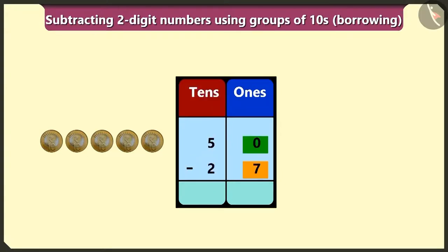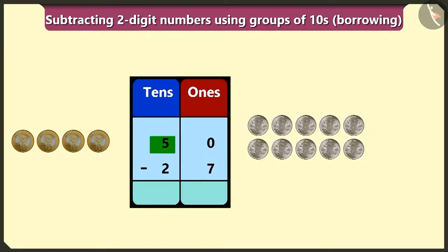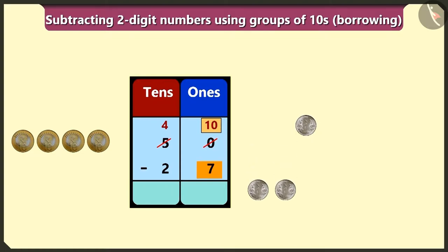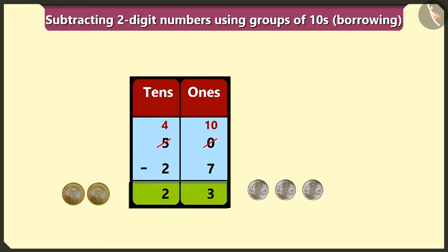First of all, we will do subtraction of numbers in the box of ones. Here we cannot subtract seven from zero in the box of ones. So we will borrow one ten from its neighbor number five in the place of tens. Now we will write ten ones in the place of zero in the box of ones, and we will write four tens instead of five tens in the box of tens. If we subtract seven ones from ten ones, we will have one, two and three left. Now if we subtract two tens from four tens in the box of tens, we will get two tens. In this way, after subtracting twenty-seven rupees from fifty rupees, the milk seller uncle will return us two tens and three ones — means twenty-three rupees.